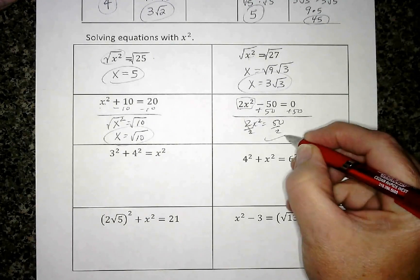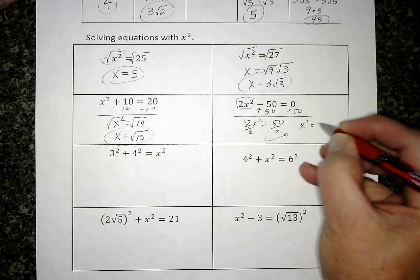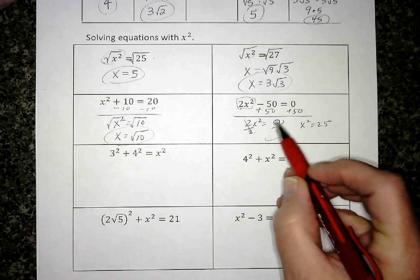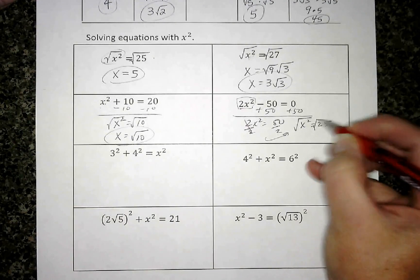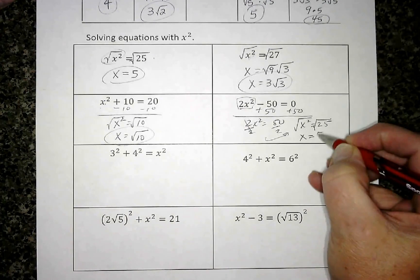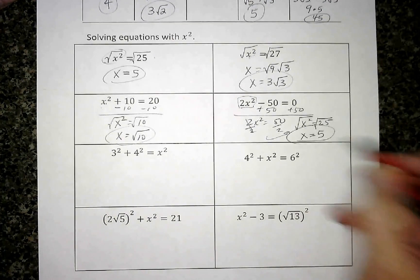I want to get the x² by itself, so I'm going to divide by 2. x² = 25, 50 divided by 2. Now at this point I have x². To get just down to x, I'm going to square root both sides, and the square root of 25 is 5.